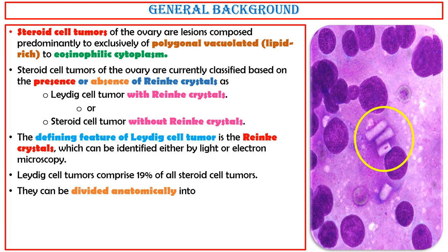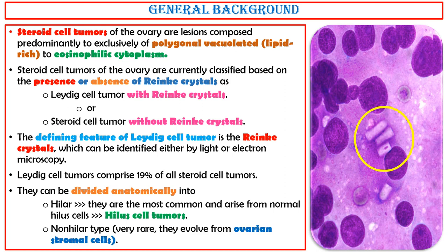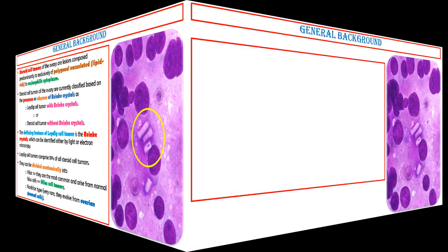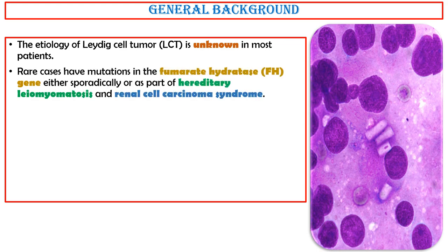They can be divided anatomically into Hila type — the most common, which arise from normal Hila cells and are called Hila cell tumors — and non-Hila type, which are very rare and evolve from ovarian stromal cells. The etiology of Leydig cell tumor is unknown in most patients. Rare cases have mutations in the fumarate hydratase (FH) gene, either sporadically or as part of hereditary leiomyomatosis and renal cell carcinoma syndrome.